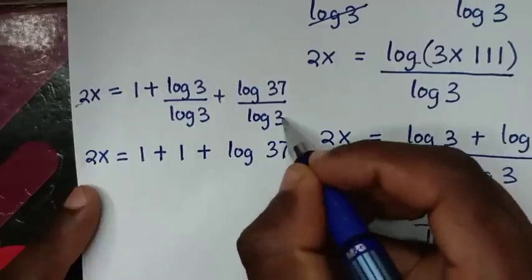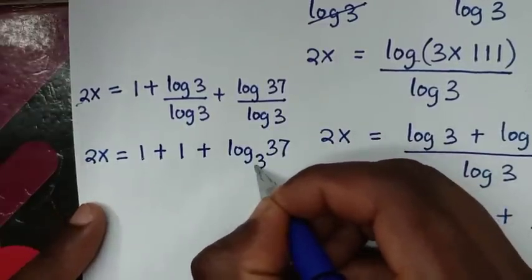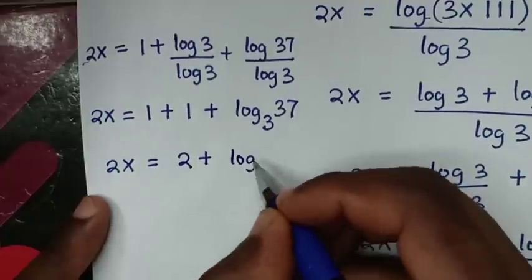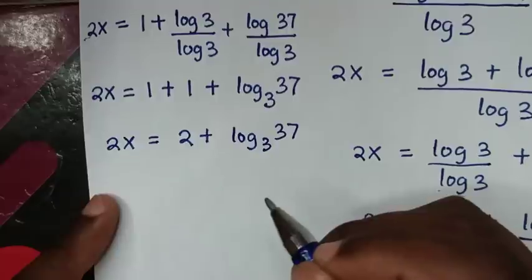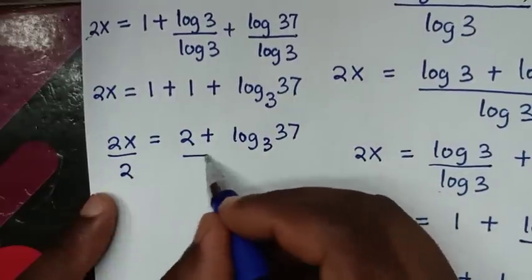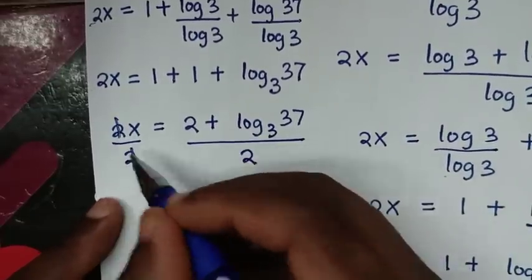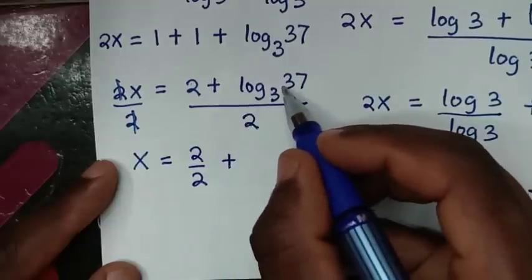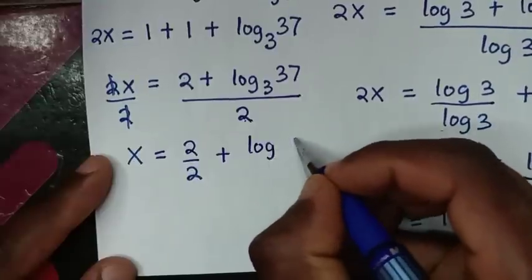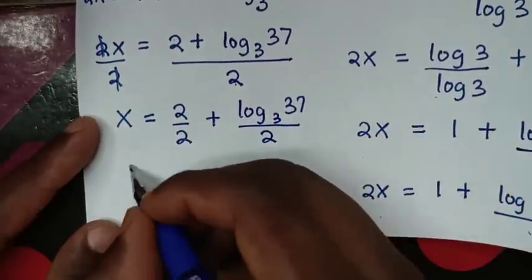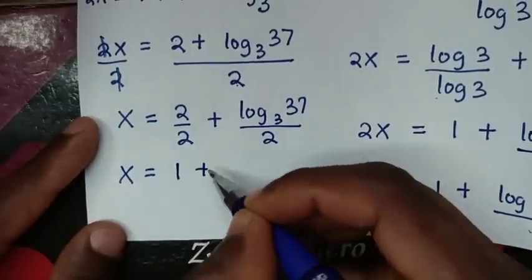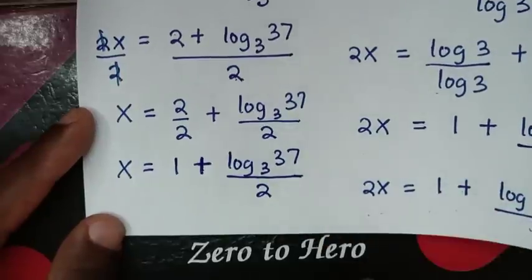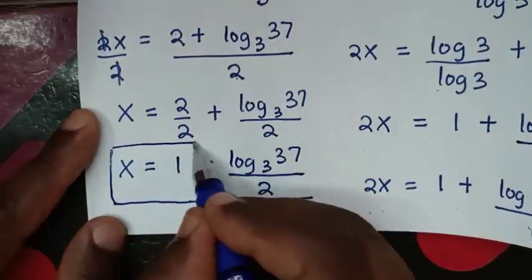So it will be 2x is equal to 1 plus 1 is 2, then plus log of 37 base 3. Then in the next step we divide by 2 on both sides, so it will be x is equal to 2 divided by 2, which is 1, then plus log of 37 base 3 divided by 2. So this is the final answer for the value of x in this problem.